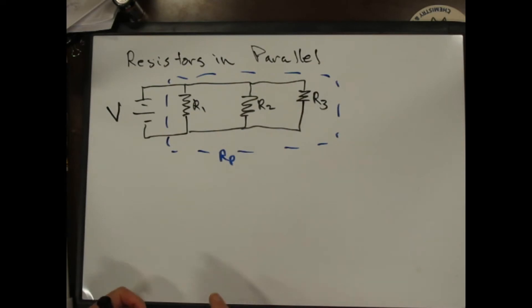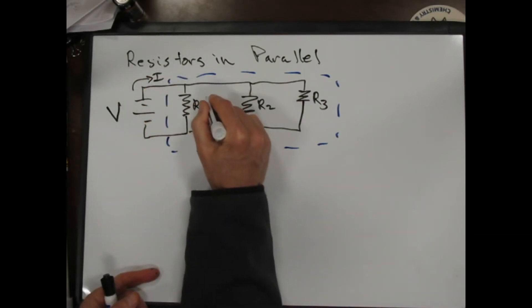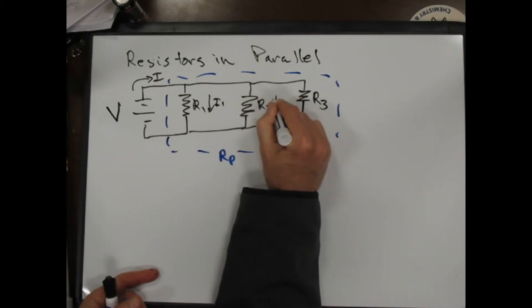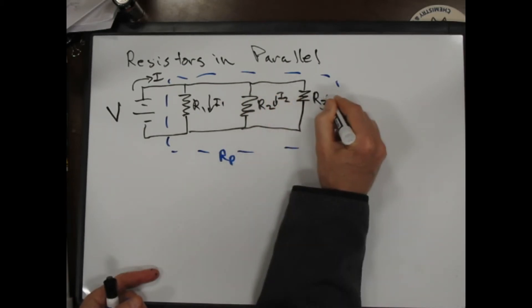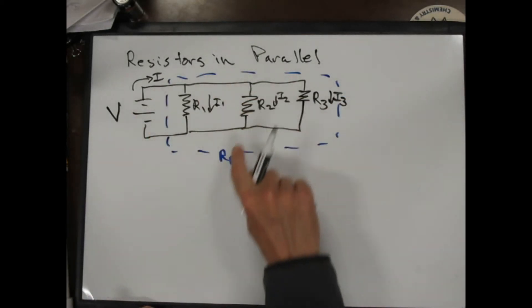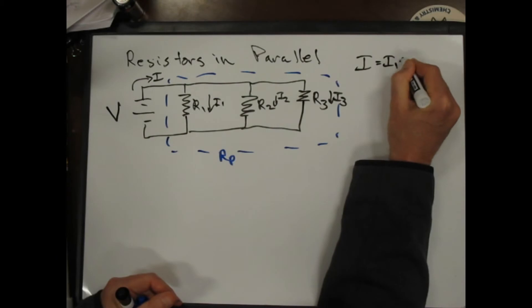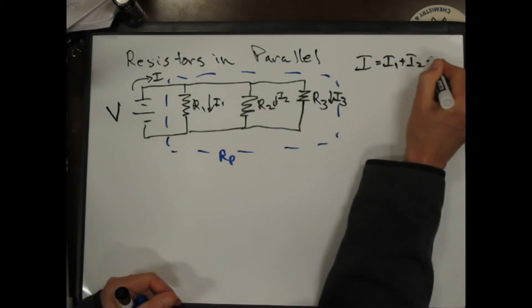We want to know how is R parallel related to the resistances across each of these guys. Notice in this case we'll call this current I, but this current I splits into I1, I2, and I3, depending on which resistor it goes through. Unlike the series circuit, where the current was the same through each guy, here we have I, which is our total current, is equal to I1 plus I2 plus I3.